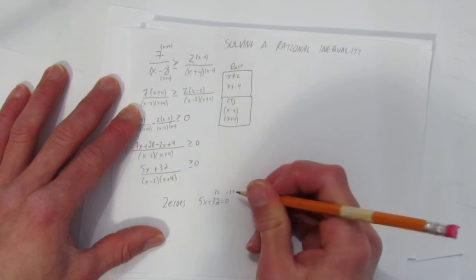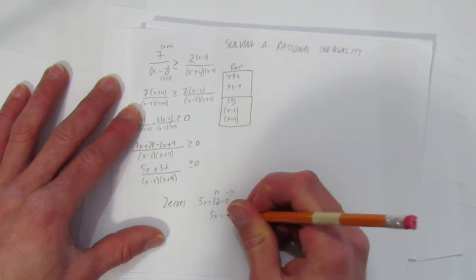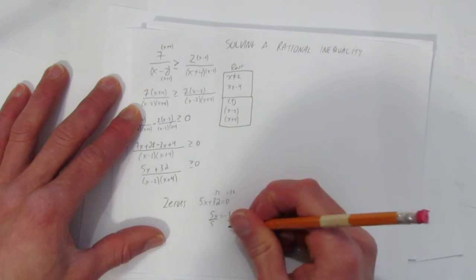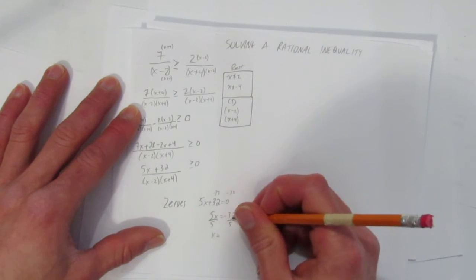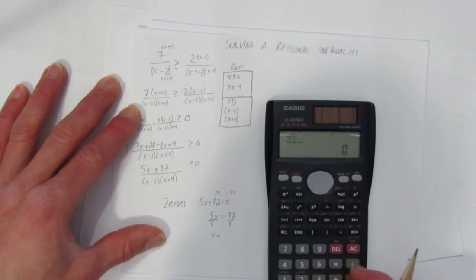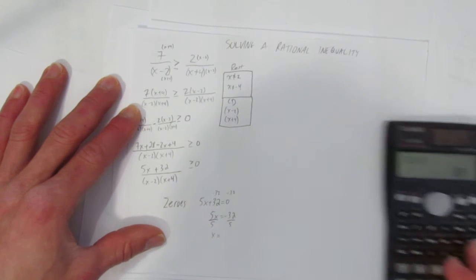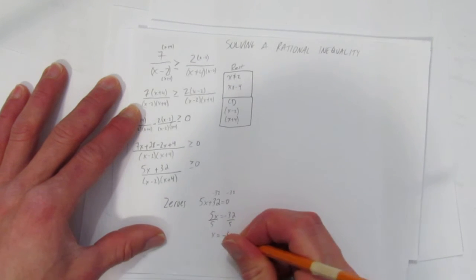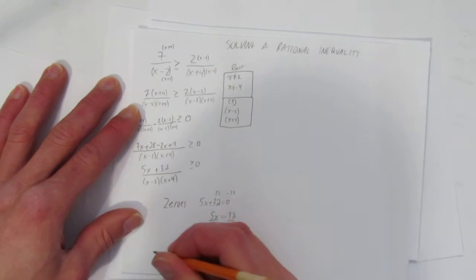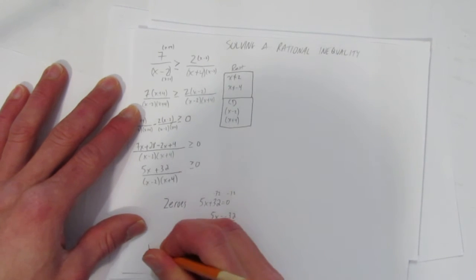Take away 32 both sides, you get 5x is negative 32. And to get x by itself, divide by 5, and x is negative 32 over 5. You can leave it as a fraction, but it might be more helpful with what's coming next to do it in your head if you want, to think of that as negative 6.4. Those are the zeros. Well, there's one. Negative 6.4.